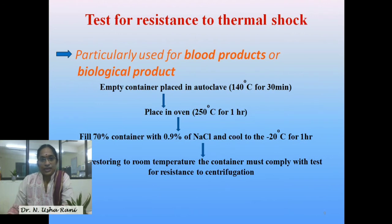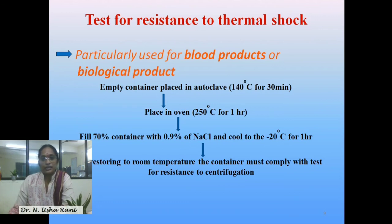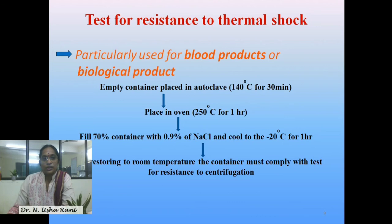The test for resistance to thermal shock is performed especially when filling blood products or biological products. Empty the glass container and place it in an autoclave at 140 degrees centigrade for 30 minutes. Then place it in an oven at 250 degrees centigrade for 1 hour. Fill 70 percent of the container with 0.9 percent sodium chloride, cool to around minus 20 degrees centigrade, and then restore to room temperature. After restoring to room temperature, the container must comply with the test for resistance to centrifugation.